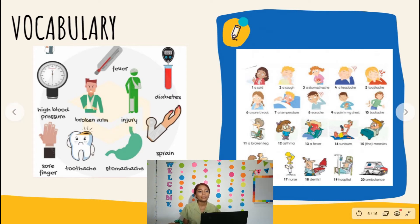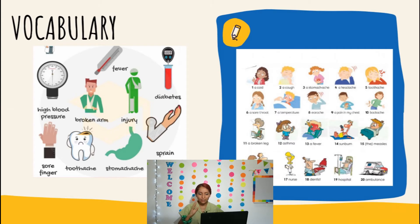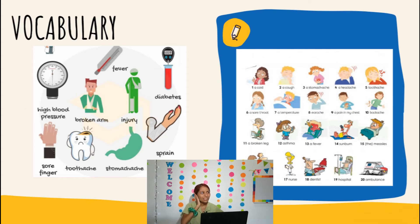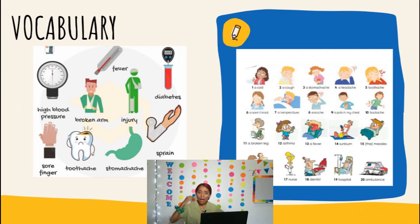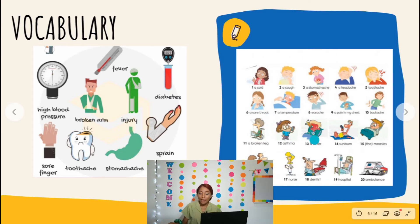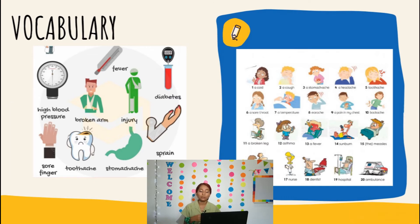Please pronounce this with me: a cold, a cough, stomachache, headache, toothache, sore throat, temperature, earache, a pain in my chest, a backache, a broken leg, asthma, a fever, a sunburn, and anemia. Then we have: doctor, nurse, dentist, hospital, and ambulance.